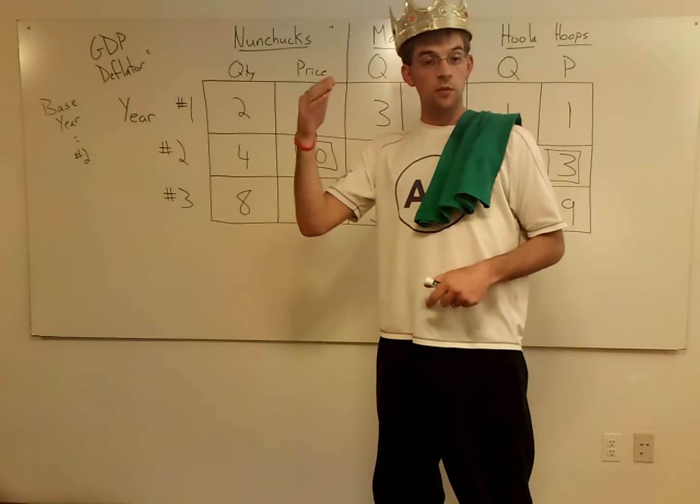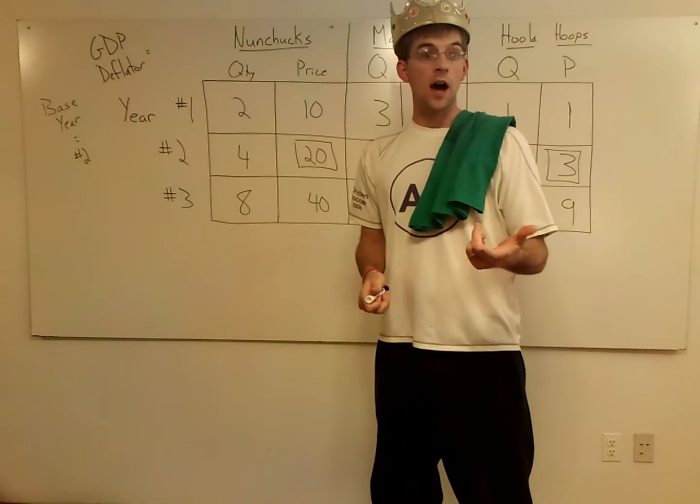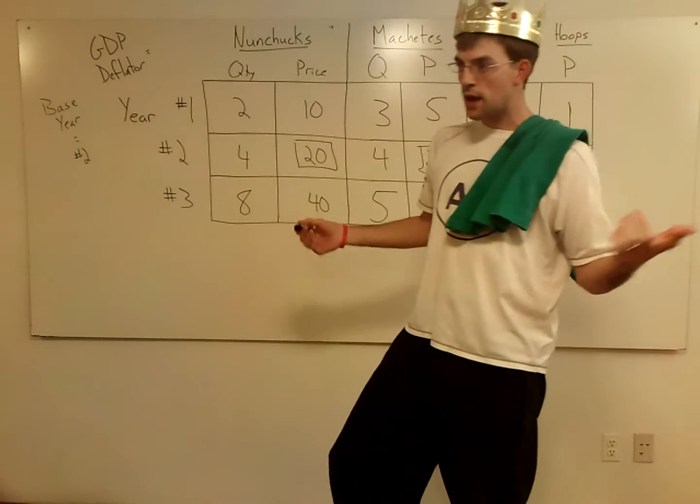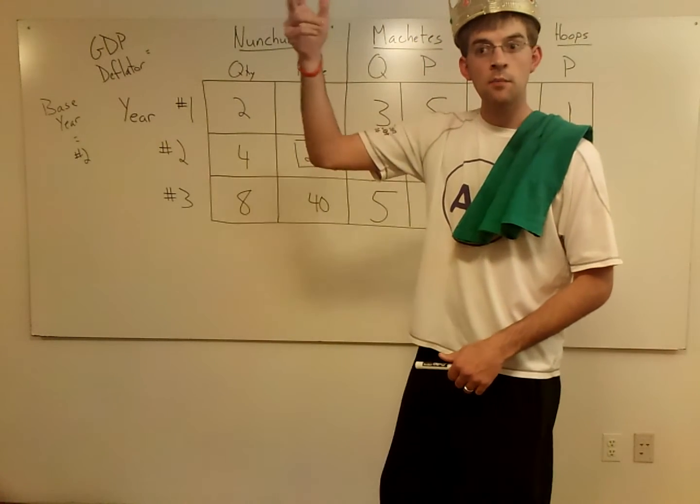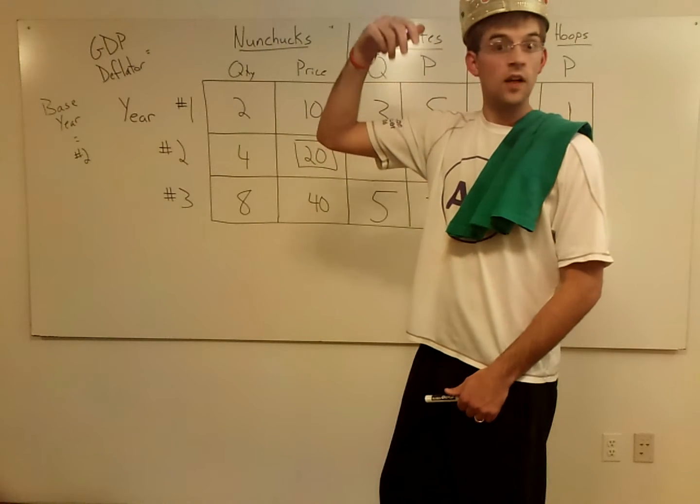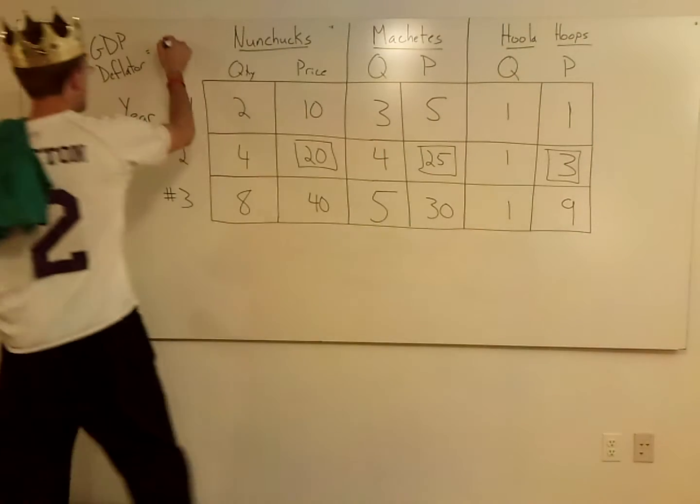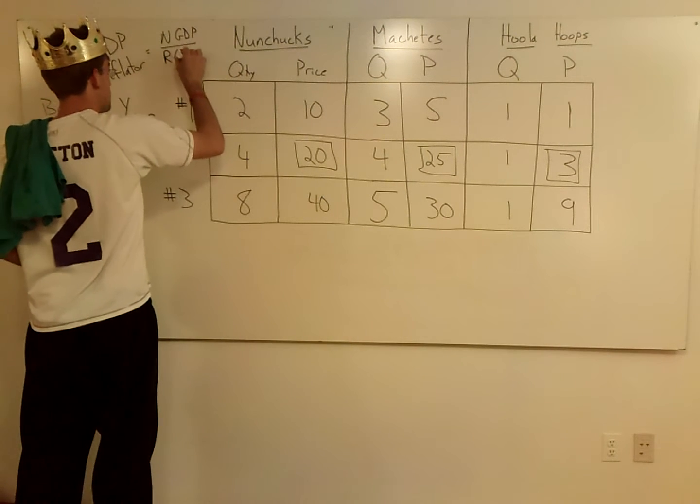And so this comparison between nominal and real GDP helps us see how the prices are changing between the years here. And the way I remember the GDP deflator is it's nominal over real and it just follows the alphabetical order. N over R. So nominal GDP over real GDP.